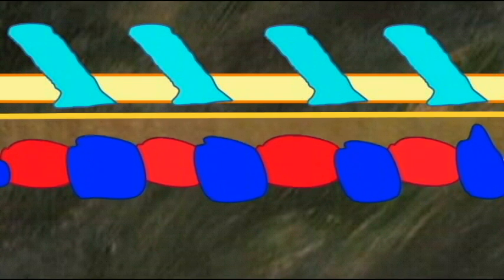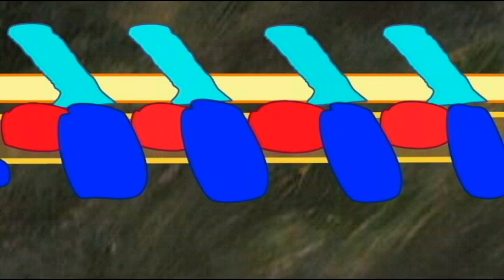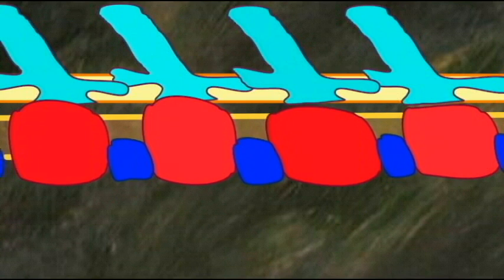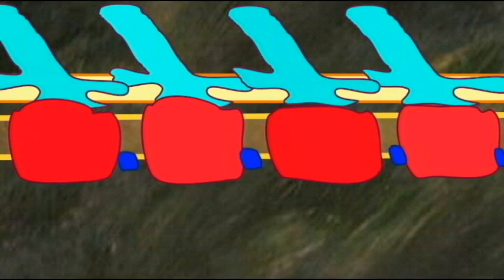The notochord was the original support rod down the longitudinal axis of the early vertebrates. Over time, these separate cartilage elements became larger, and they began to articulate and fuse.